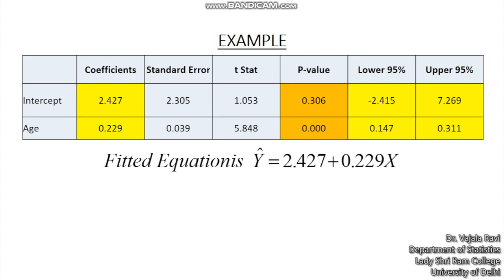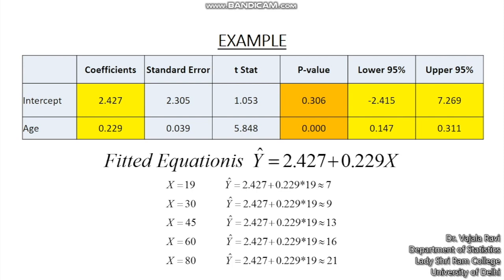So more detailed analysis. The fitted equation can be written as y cap is equal to the intercept plus the slope 0.229 into the x variable. So remember y cap here is nothing but your CT severity score, x is your age. So we can make predictions. So I just substitute x is equal to 19 in this equation I get y is equal to 7. x is equal to 30, y is equal to 9, x is equal to 45, y is equal to 13.